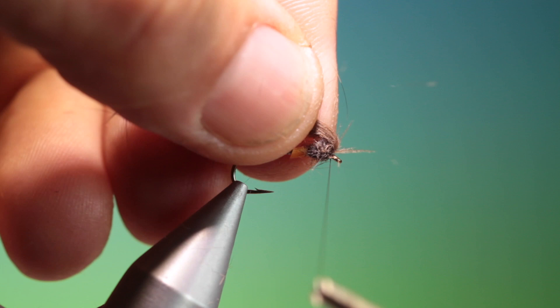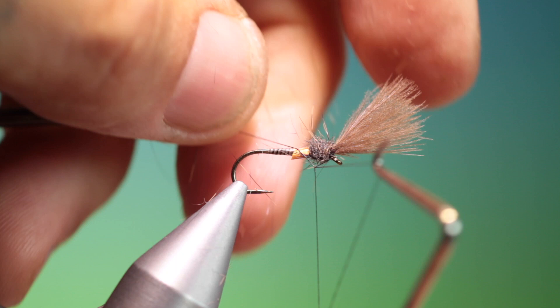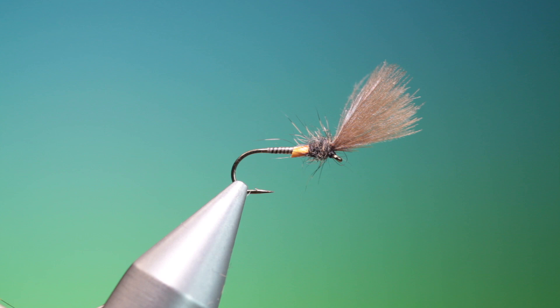And just go over the thorax with that. We lift the wing again and we finish in and remove our tying thread.